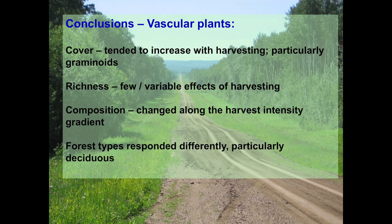Conclusions on vascular plants: cover tended to increase with harvesting, particularly for graminoids. In terms of richness, there were few and somewhat variable effects from harvesting. Composition tended to change along the gradient of harvesting intensity. Importantly, forest types responded differently — you can't have one conclusion about the impacts of a given retention level across all forest types. The different forest types responded differently, which makes sense because the ecology of those forests has developed over different timescales. The conifer forests have developed over a very long period, so removing canopy from them has a different effect than removing canopy from a deciduous forest.